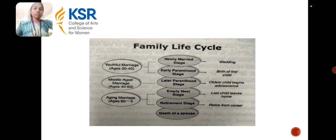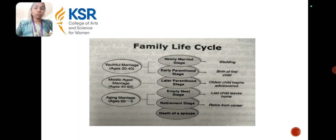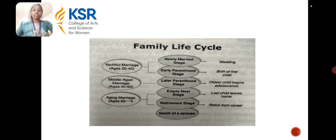This cycle represents the family life cycle. We can see the stage-by-stage process: firstly the newly married stage, then the early parenthood stage, then the later parenthood stage, then the empty nest stage, and then the retirement stage and death of the spouse. In between, the family faces events such as a wedding, birth of the first child, birth of the second child, and retirement. Everything is given in this family life cycle.